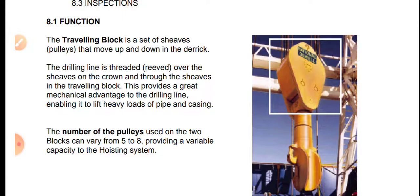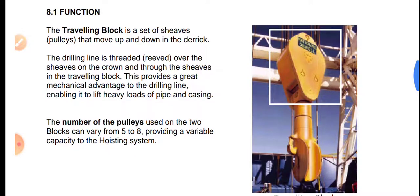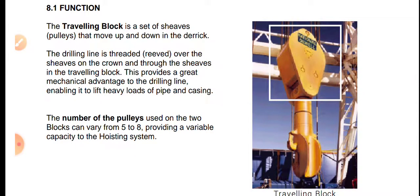The drilling line is threaded — or reeved — over the sheaves on the crown and through the sheaves in the traveling block. The drilling line is the line used to lift the entire drill string from the hole during trip out, or to insert the drill string during trip in.